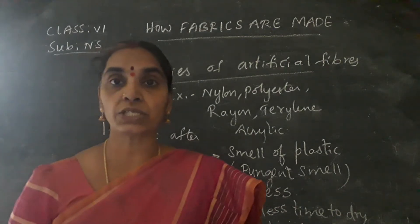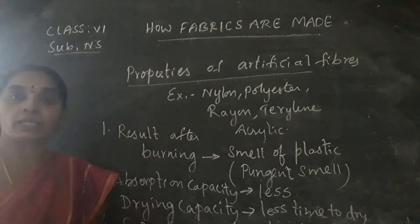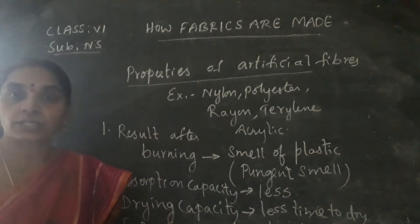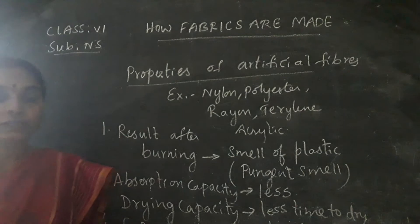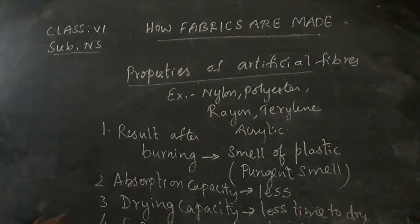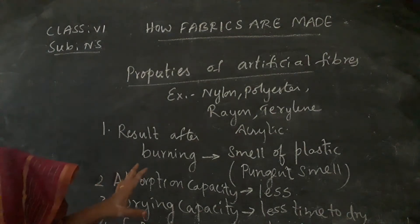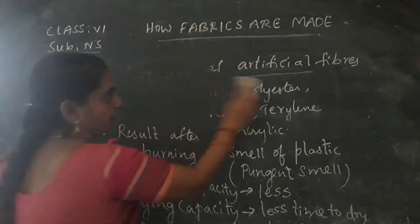So this is about the properties of artificial fibers. Now you can complete the tables from your textbook — Activity 1 of your textbook. All of you children will continue the activity now.